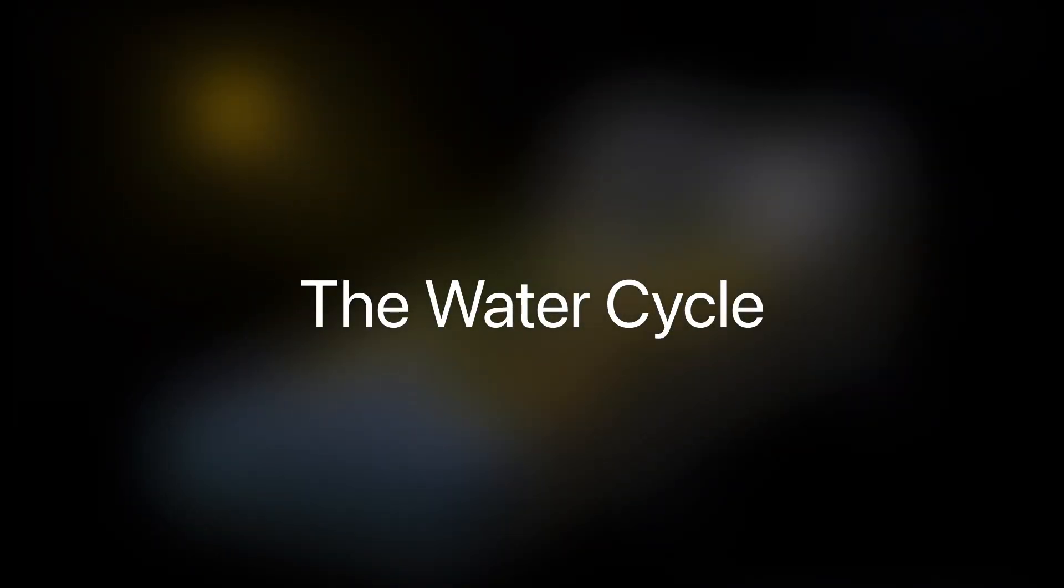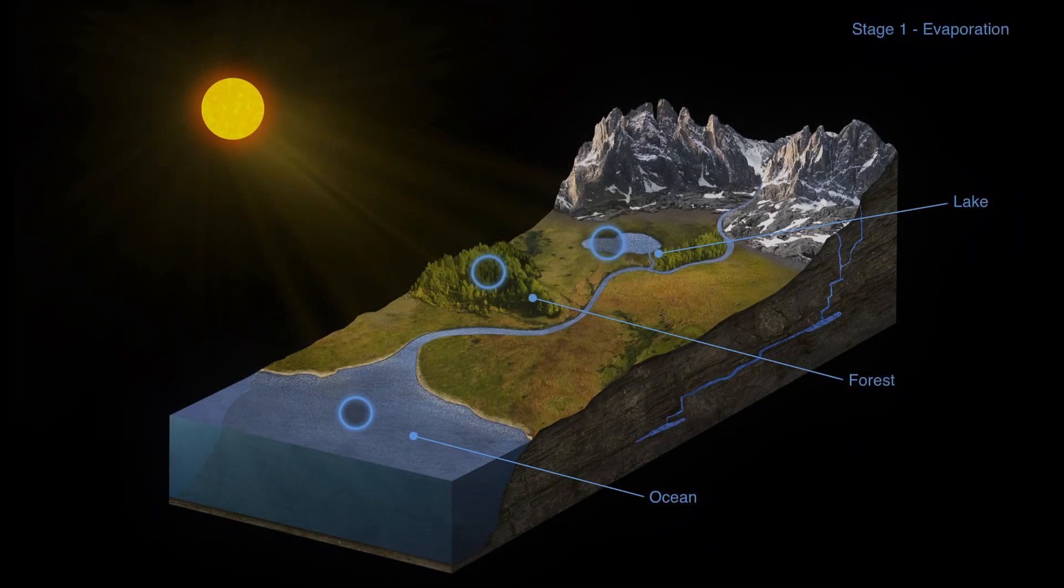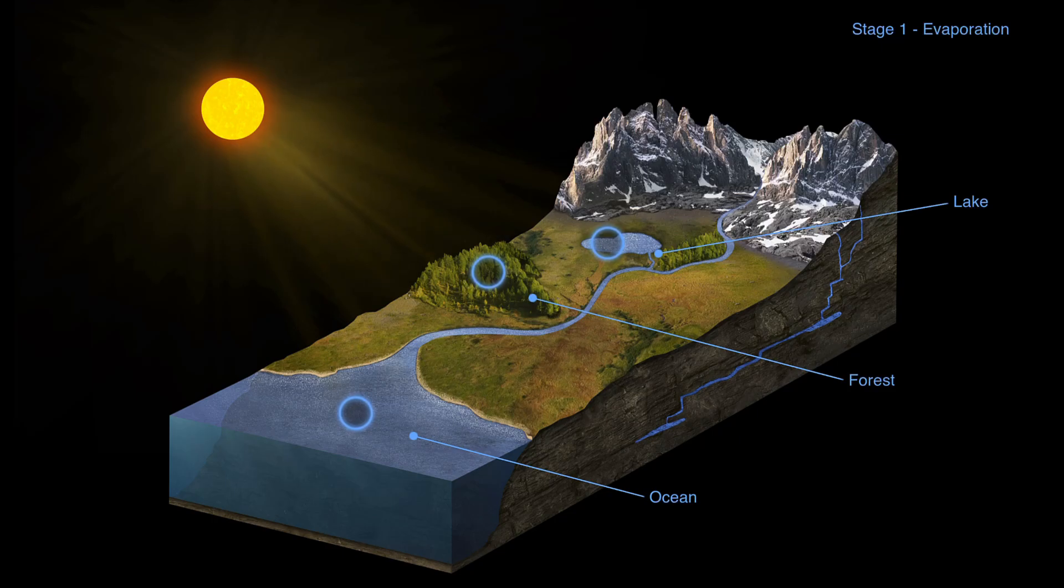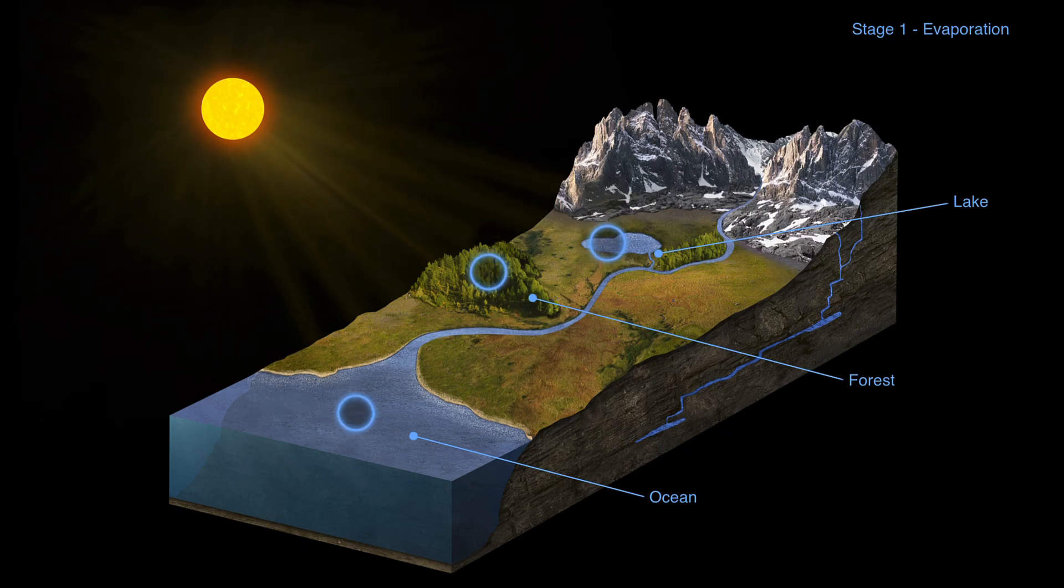Let's take a quick look at the water cycle. We'll begin with stage one, evaporation. Evaporation is a phase change of water, and what that means is it is a process by which water absorbs heat and energy from the sun and turns from the liquid phase into a gas.